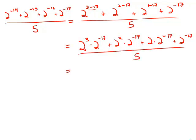Now, in the numerator, every term has a factor of 2 to the negative 17, so we can factor that out. So we get 2 to the 3 plus 2 squared plus 2 plus 1 times 2 to the negative 17. Of course, this is still all over 5.